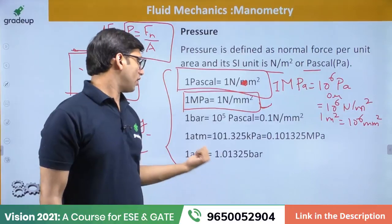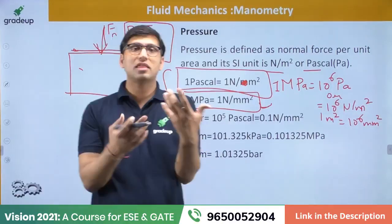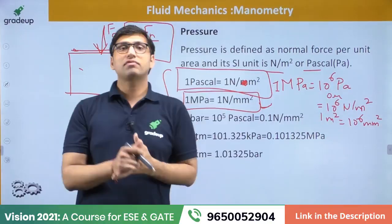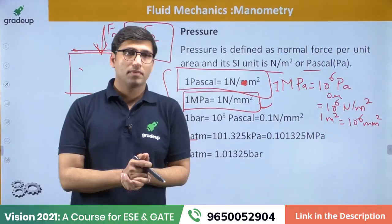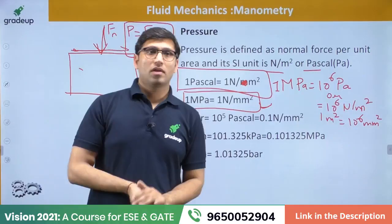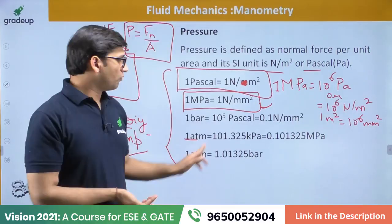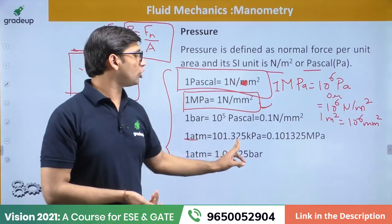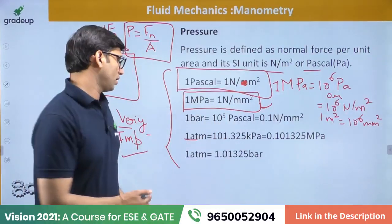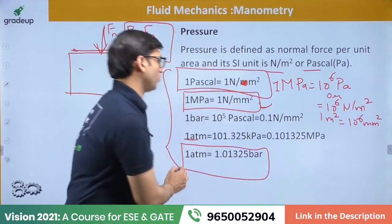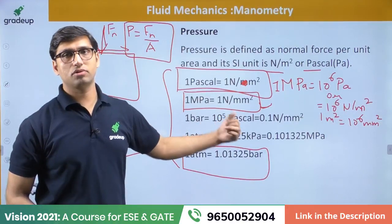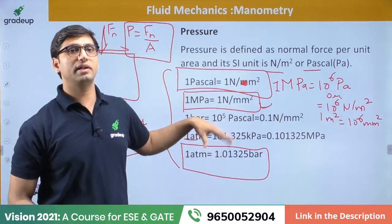One atmospheric pressure equals 101.325 kilopascal or 1.01325 bar. Atmospheric pressure is the pressure of the atmosphere, measured with the help of a barometer, which was invented by Torricelli. One bar equals 10⁵ Pascal. You have to remember all these conversion units — they are very important.